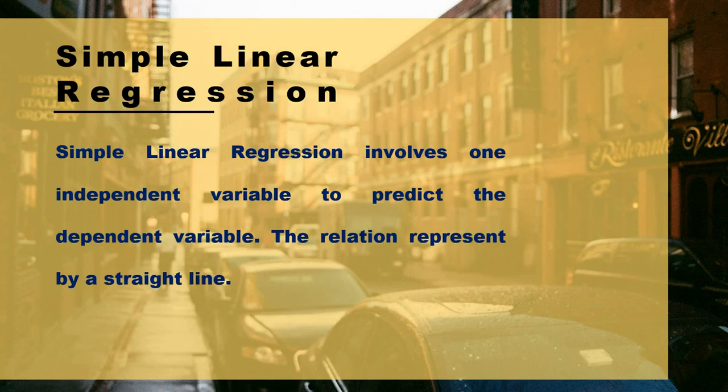Our goal is to create a linear model that predicts the values of one variable based on the values of another. The equation of simple linear regression is: y = a + b·x, where y represents the dependent variable, x represents the independent variable, a is the intercept term, and b is the slope of the line.